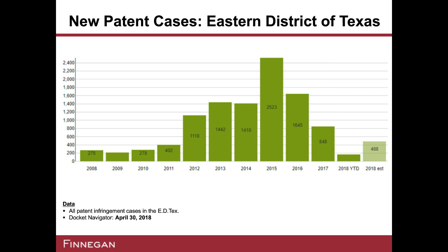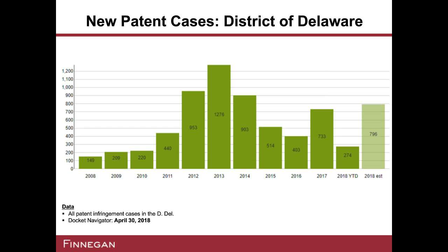Turning to Delaware, you're going to see the opposite effect. Because of TC Heartland and the district of where a company is incorporated — and many companies are incorporated in Delaware — in 2017 there's actually a very significant uptick in new patent cases filed in Delaware. We expect that trend to continue in 2018 as well. Similarly, in the Northern District of California, shown in slide 20, the number of new patent cases actually went up in 2017, and it is estimated to go up even more significantly in 2018.